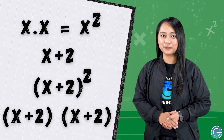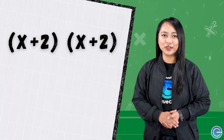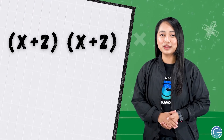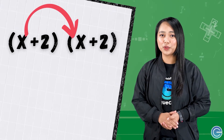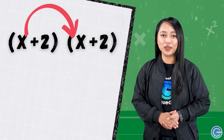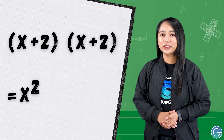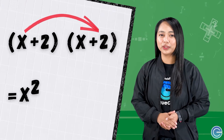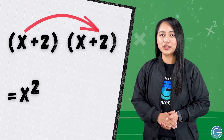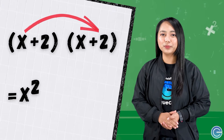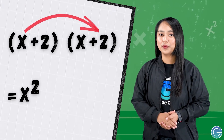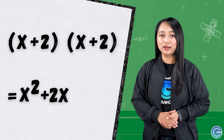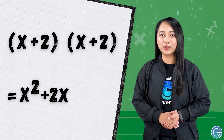With that in mind, you're ready to apply the FOIL method to squaring binomials. Starting with the F, which stands for the first terms of each polynomial — in this case the first terms are both x, so when you multiply them together you have x squared. Next, multiply the outer terms of each binomial: that's the x from the first binomial and the 2 from the second binomial, since they're on the outer edges of the multiplication. That leaves you with 2x.